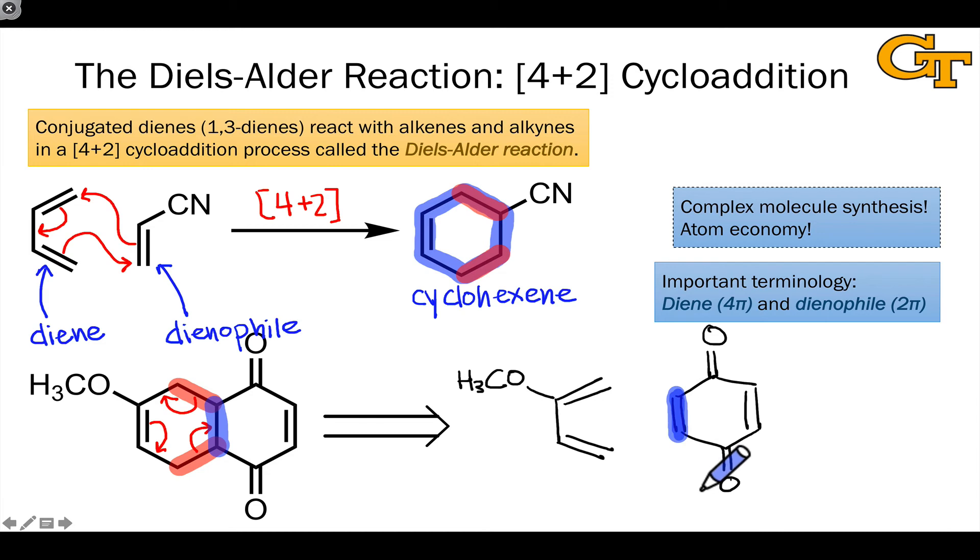So hopefully this example gives you a sense of how you can apply the Diels-Alder reaction in a retrosynthetic sense to see how a six-membered cyclohexene ring can be prepared from a diene and dienophile.